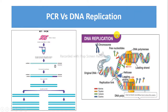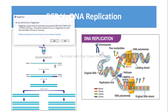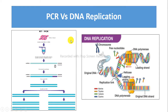Now we will see the difference between PCR and DNA replication. PCR is an in vitro process which occurs inside a test tube, whereas DNA replication is an in vivo process which occurs inside living organisms or living cells. For PCR the target is shorter, while for DNA replication the target is longer.